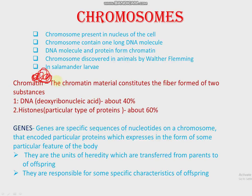Chromatin fibers — from what are they made up of? This is an important question asked in exams. Chromatin is made up of two substances. First is DNA, deoxyribonucleic acid, which is present at 40% in the nucleus. Second is histone — histones are a particular type of protein — and their amount is 60%. Together, DNA and histones form chromatin fibers. Remember: the question may ask you to write the substances from which chromatin material is formed, and your answer will be DNA and histone.